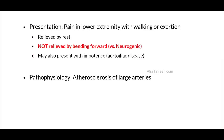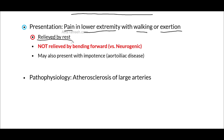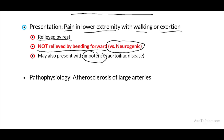One condition in which we are going to frequently utilize our ABI is vascular claudication. In vascular claudication, our classic patient is going to have pain in the lower extremity, particularly with walking or exertion. This pain is going to be relieved by rest; however, it is not going to be relieved when the patient bends forward — in contrast to the shopping cart sign seen in neurogenic claudication. Additionally, patients with vascular claudication may present with impotence, which is classically the case in patients who have aortoiliac disease. The pathophysiology is atherosclerosis, particularly of the large arteries.